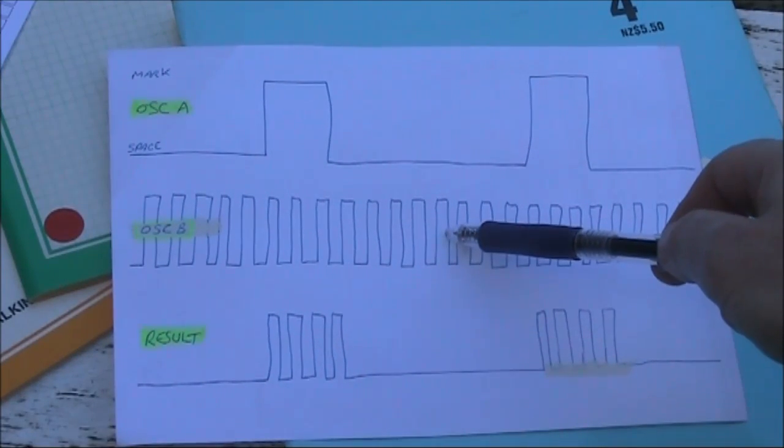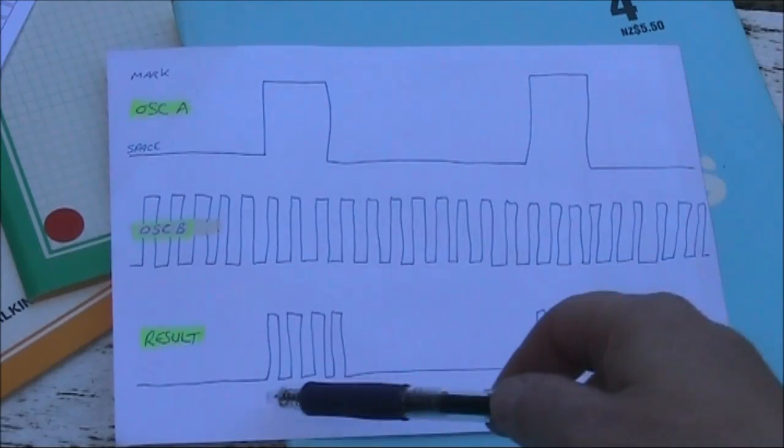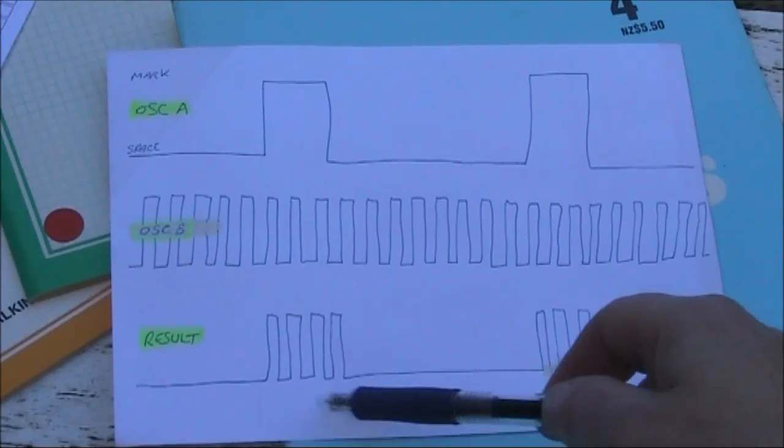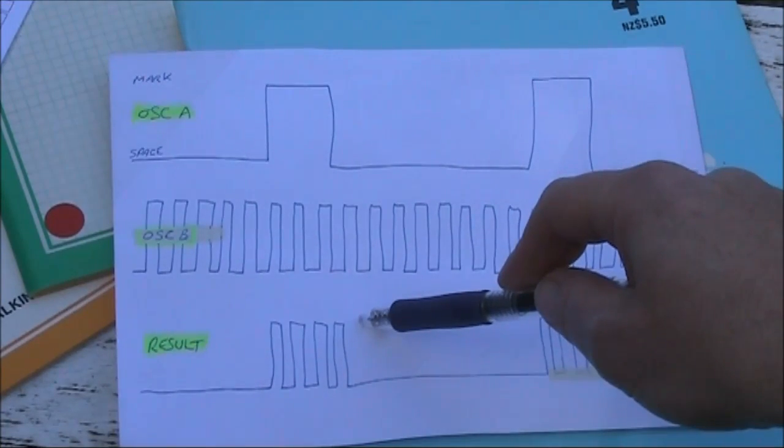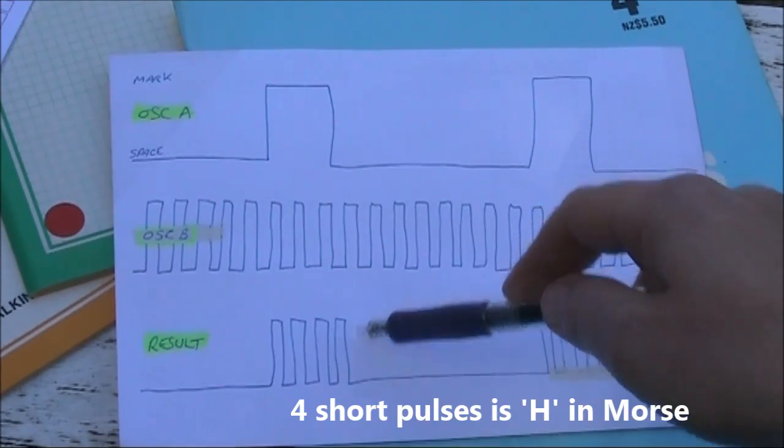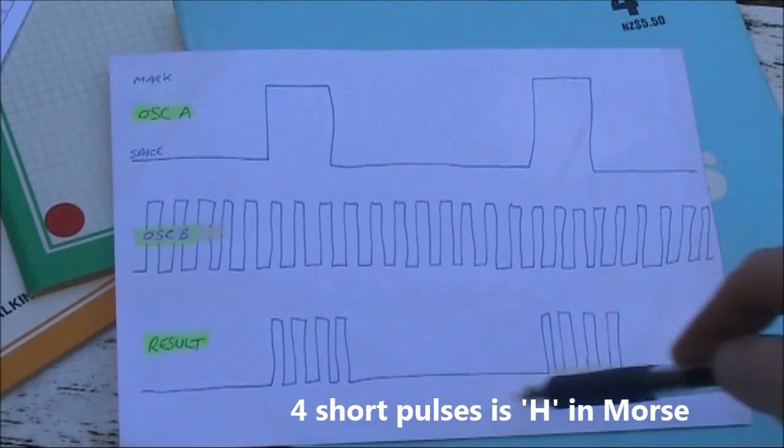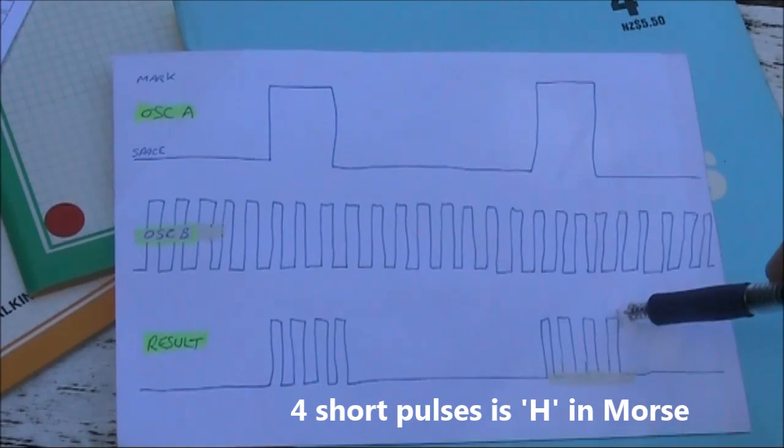But because of the way that we've gated the second oscillator to only be on when the first one is, the resultant output is this. We can tie the output from here to key a transmitter. The resultant signal is a gap followed by a letter H in Morse, another gap, and the letter H.